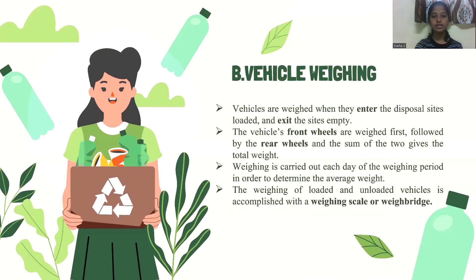Next is vehicle weighing. In order to weigh the vehicle, we weigh it once it enters the disposal site and also when it exits. Usually the vehicle's front axle is weighed first, followed by the rear axle, and the sum gives the total weight. This weighing is carried out every day to determine the average weight, and it can be accomplished using a weighing scale or weight bridge.